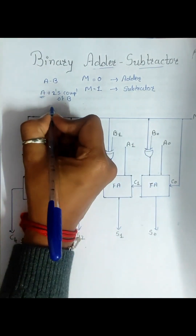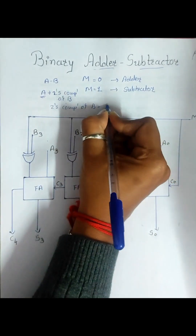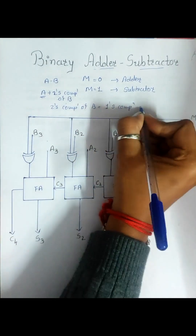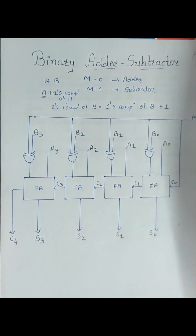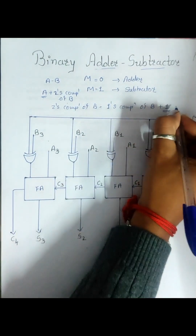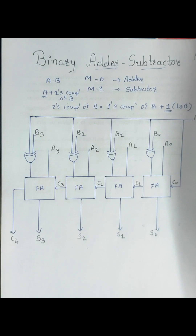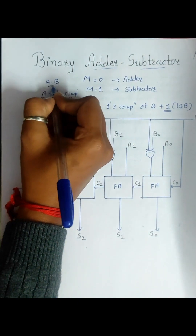How to find the 2's complement of B? The 2's complement of B is equal to the 1's complement of B plus 1. So we need to first find the 1's complement of B, that means B dash. If we have B0, B1, B2, B3 — a 4-bit number — we find B0 dash, B1 dash, B2 dash, B3 dash, and we add 1 at the least significant bit (LSB).